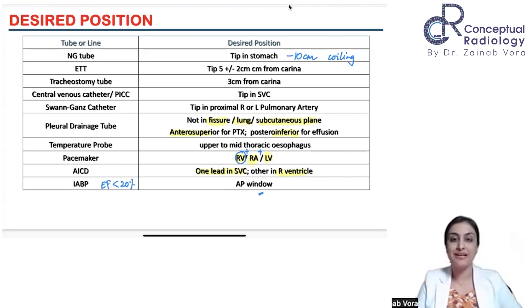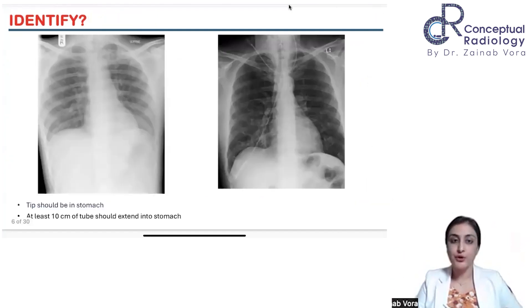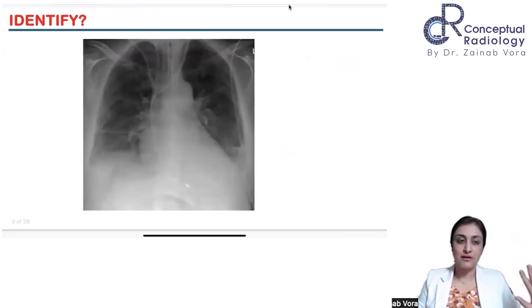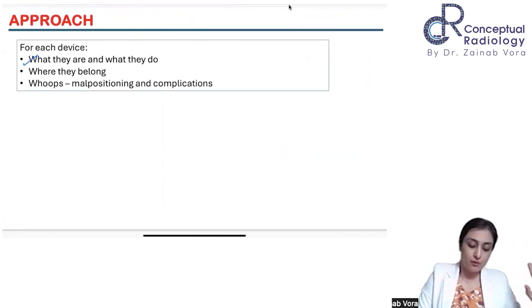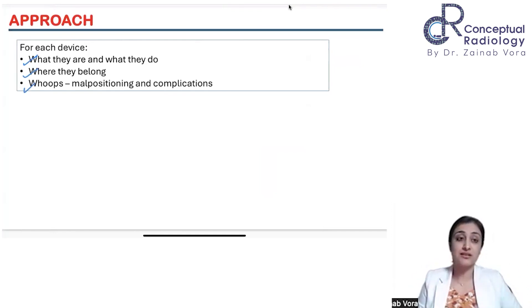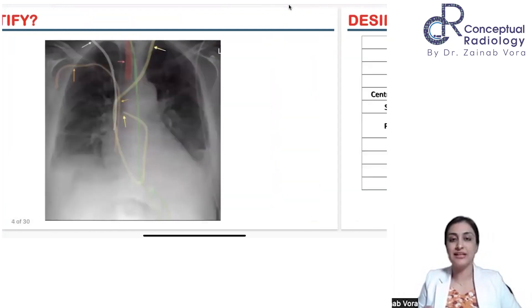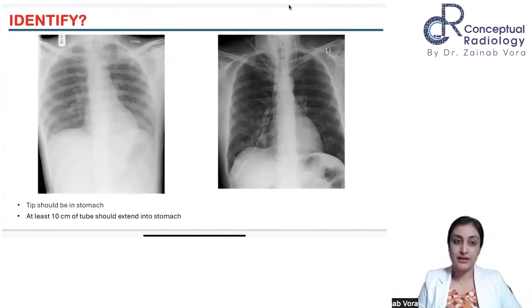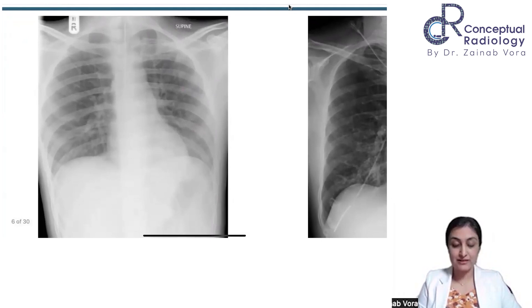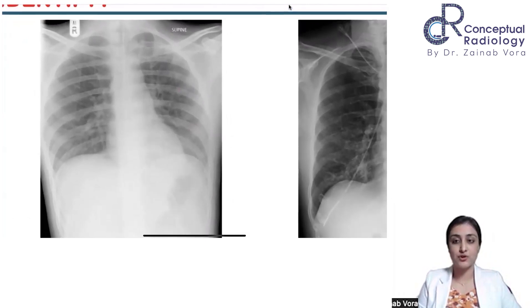Now let's look at each tube and its complications. As I said, the three W's for any tube: What is it? Where does it belong? And Whoops — is there a complication? That is your job as a radiologist. So let's look at the first tube here — can someone tell me what this tube is and whether it is adequately placed or not?